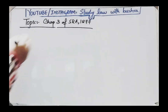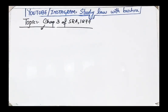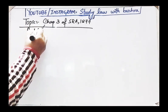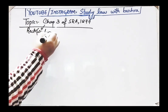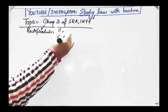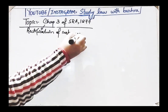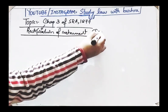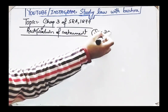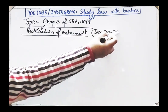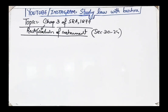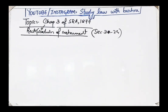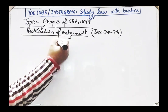Chapter 3 of the Specific Relief Act basically deals with the topic of rectification of instruments. It starts from Section 31 and goes up till Section 34. We will discuss each section one by one. But before moving towards rectification of instruments, we need to understand what the word 'rectification of instrument' means.